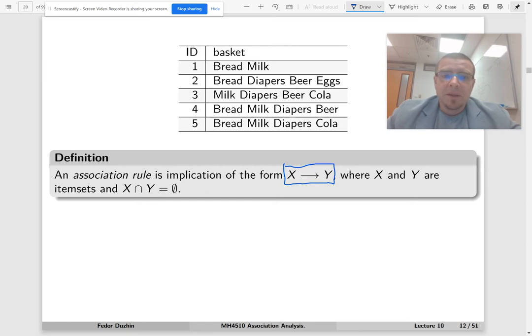For example, something like bread, milk, and diapers implies diapers, beer, and cola is not an association rule because there is an intersection of the left-hand side and the right-hand side.